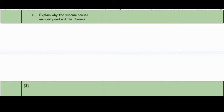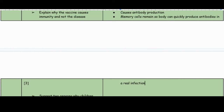Explain why the vaccine causes immunity and not the disease. The vaccine triggers antibody production in your body, and memory cells then remain so they can quickly produce antibodies in the case of a real infection — that is why you don't get the disease.